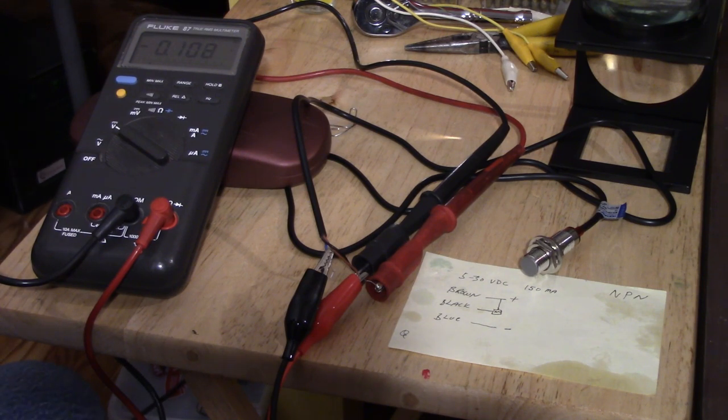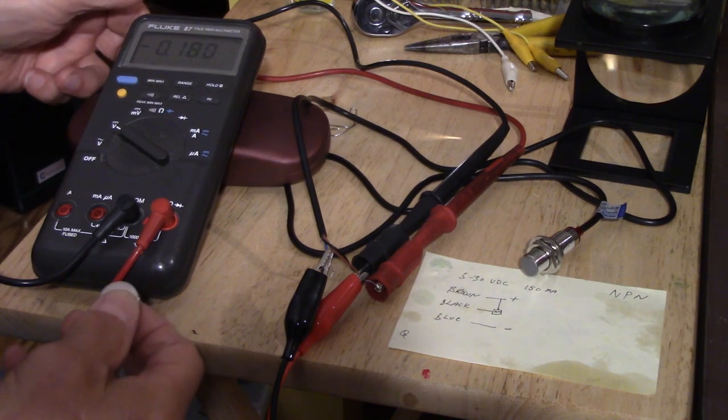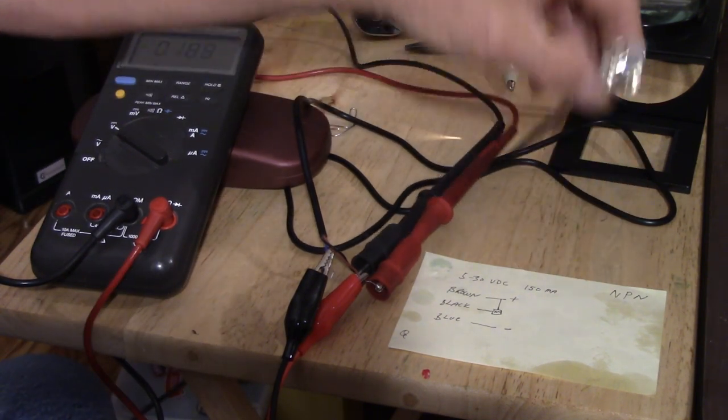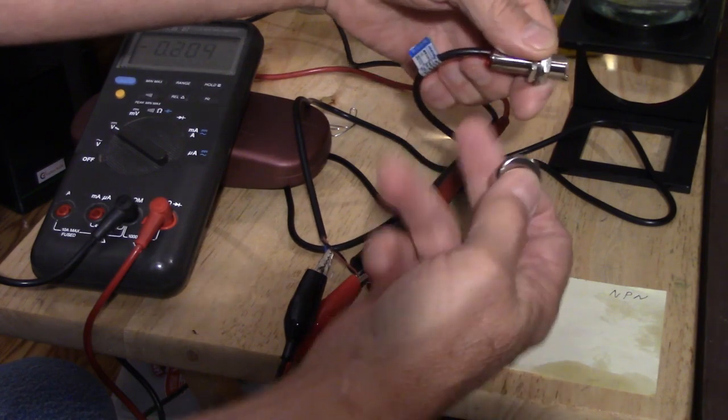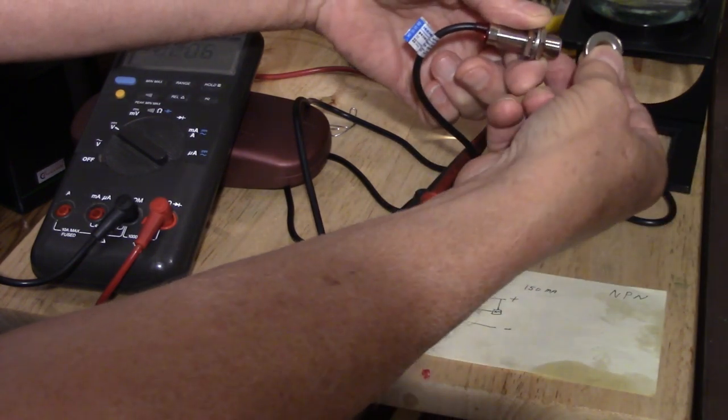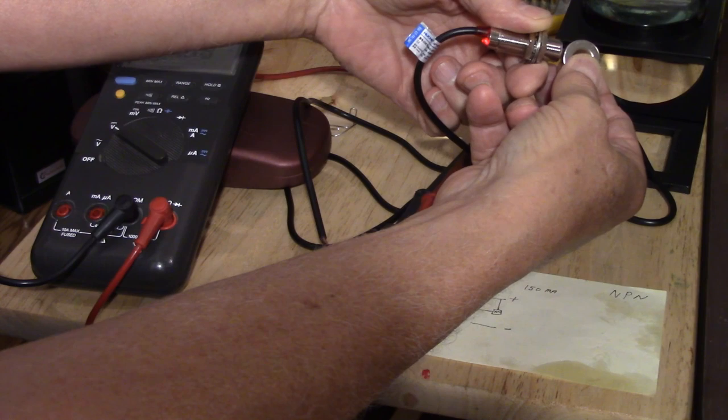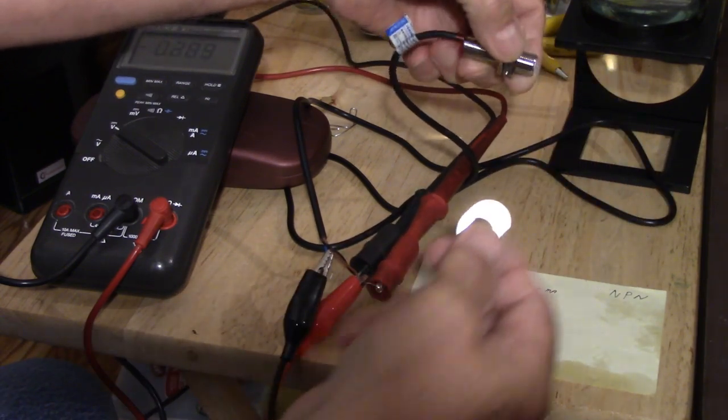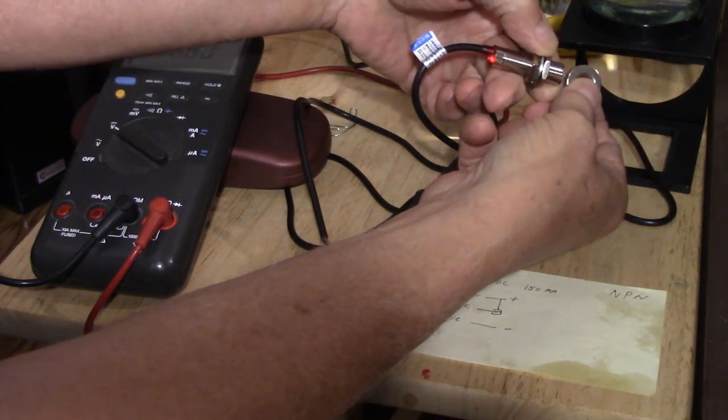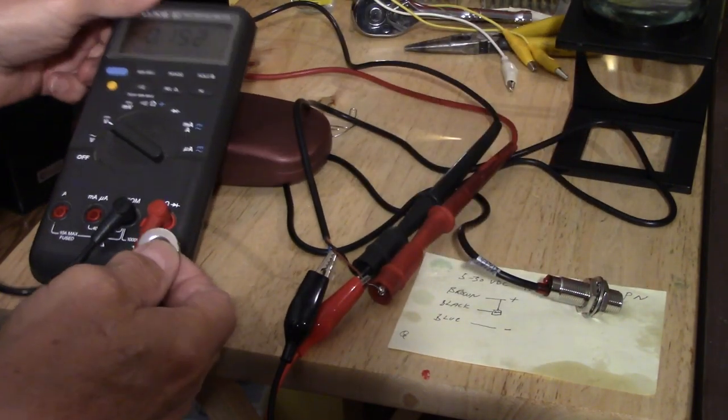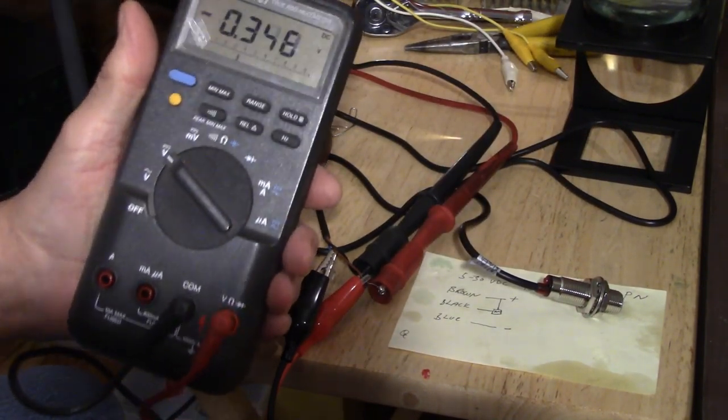I've got the negative on the blue wire, the positive on the brown wire that are coming from the power supply, and then my Fluke is on the positive wire and the black wire in the middle, just in case you were wondering what the wiring arrangement is there.